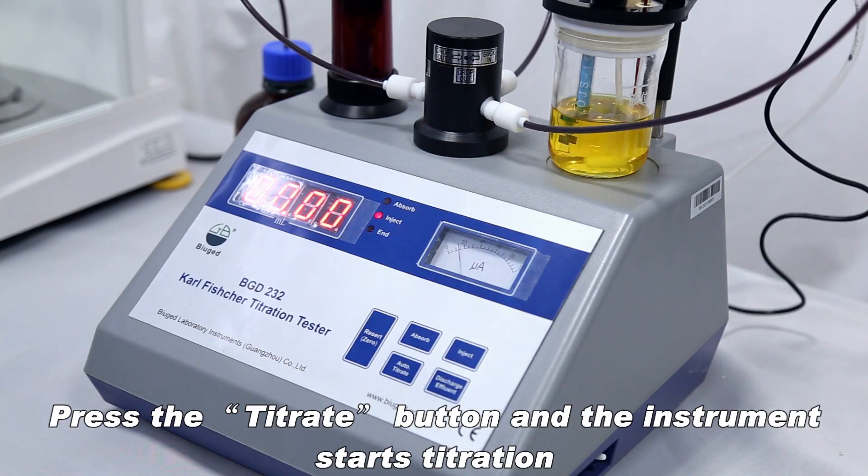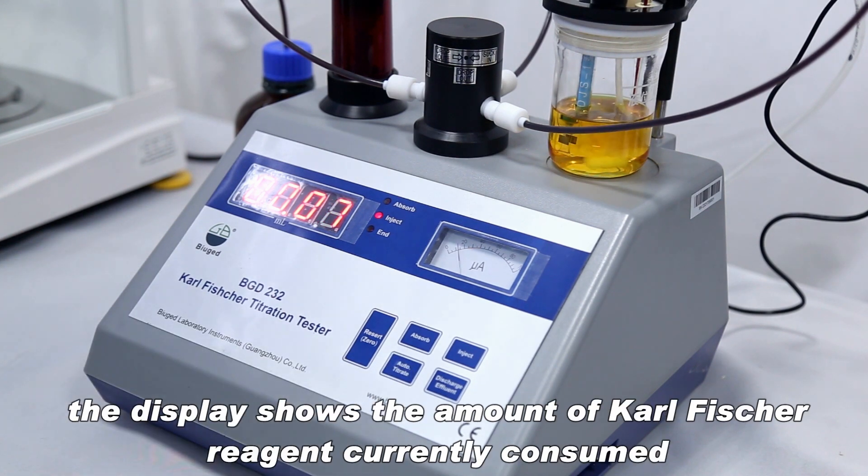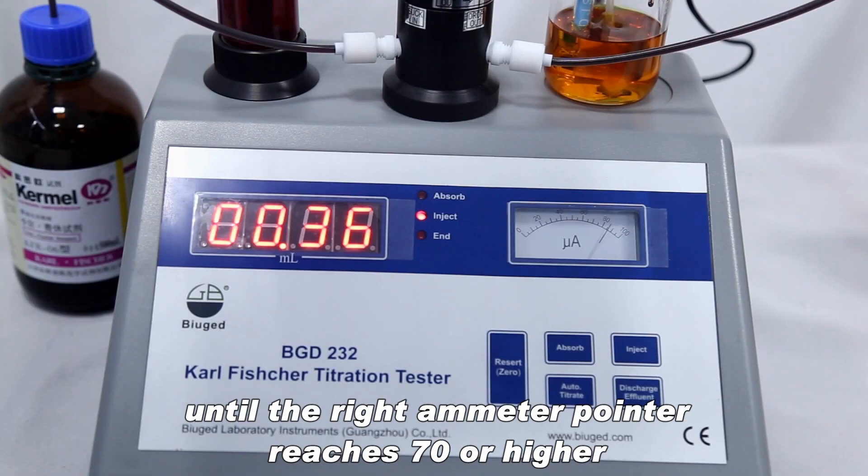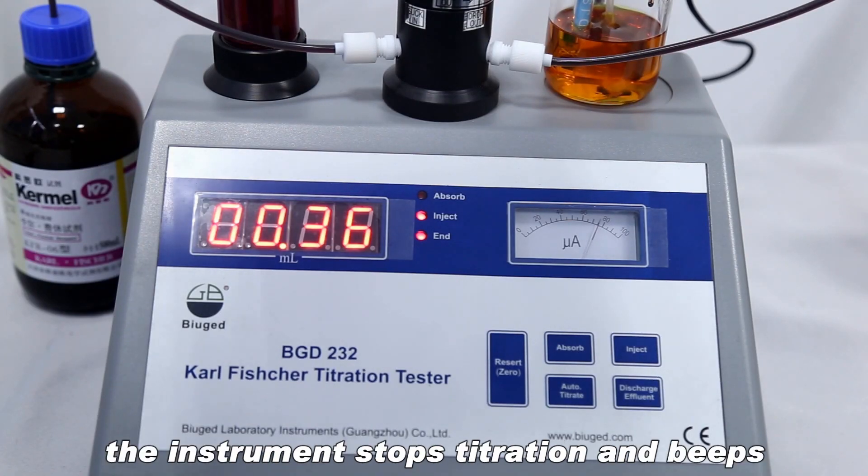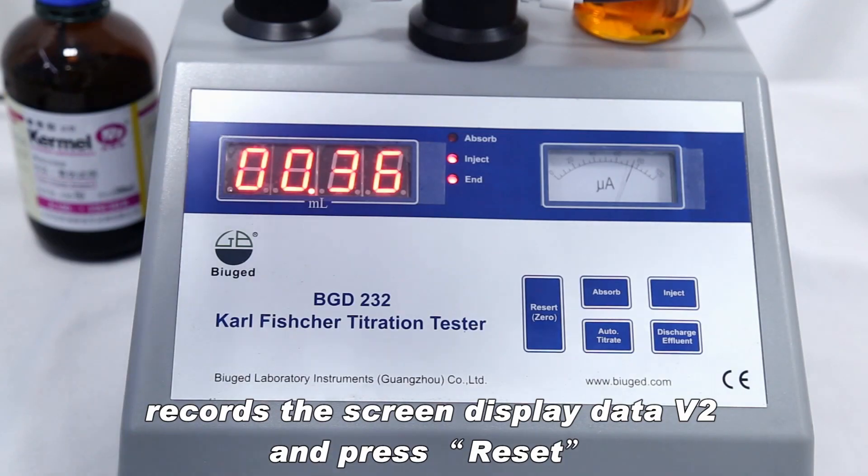Press the titrate button and the instrument starts titration. The display shows the amount of Karl Fischer reagent currently consumed until the right ammeter pointer reaches 70 or higher. The instrument stops titration and beeps, records the screen display data B2, and press reset.